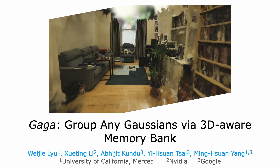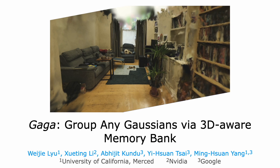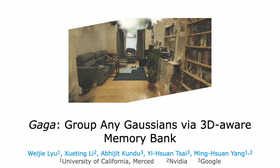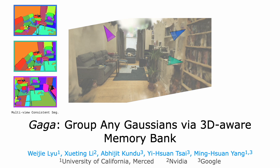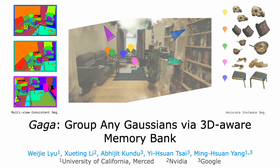We present GAGA: Group Any Gaussians via 3D-Aware Memory Bank. Given a collection of posed images, GAGA reconstructs the 3D scene and provides multi-view consistent segmentation. GAGA also provides accurate 3D instance segmentation, which can be used for downstream tasks like object and scene manipulation.